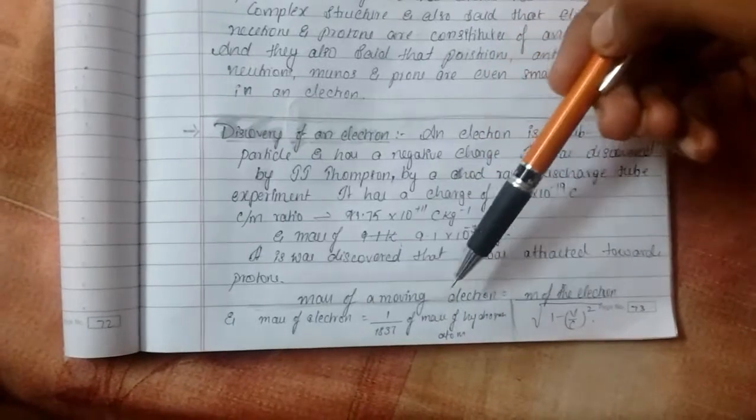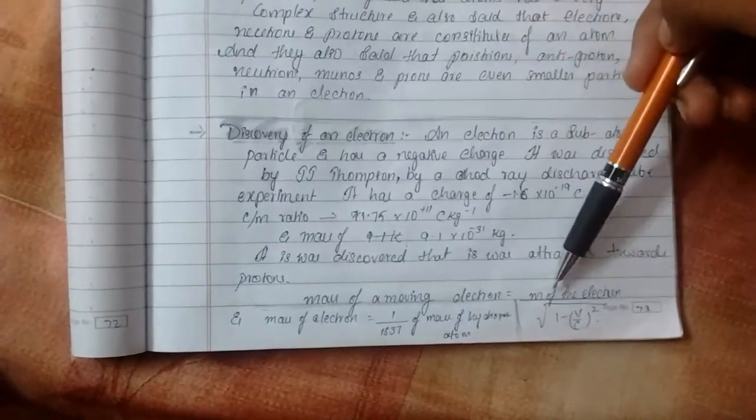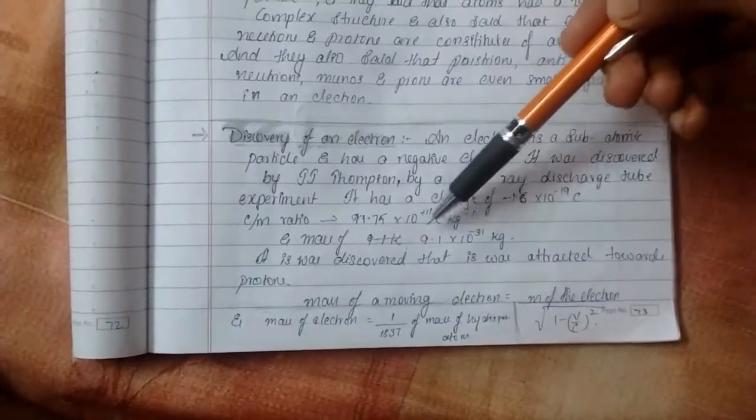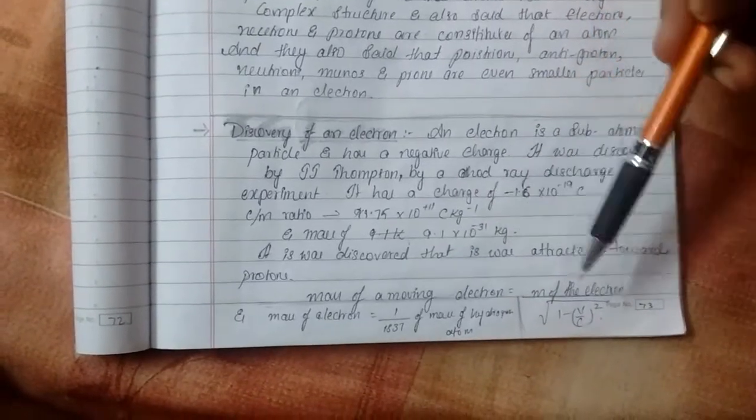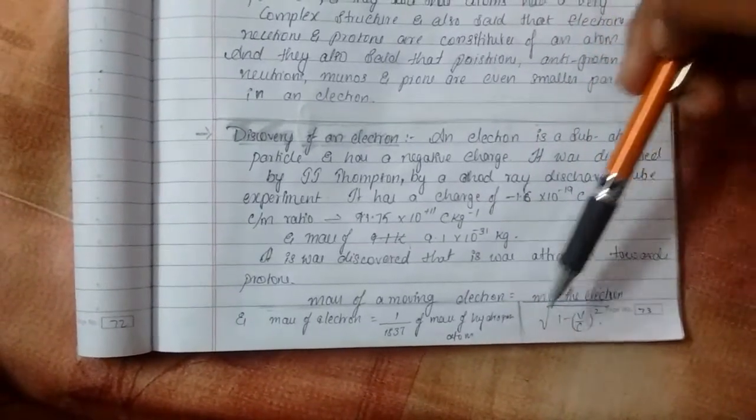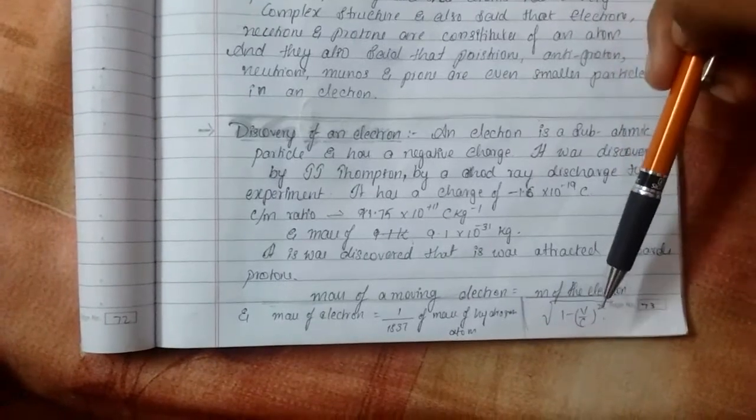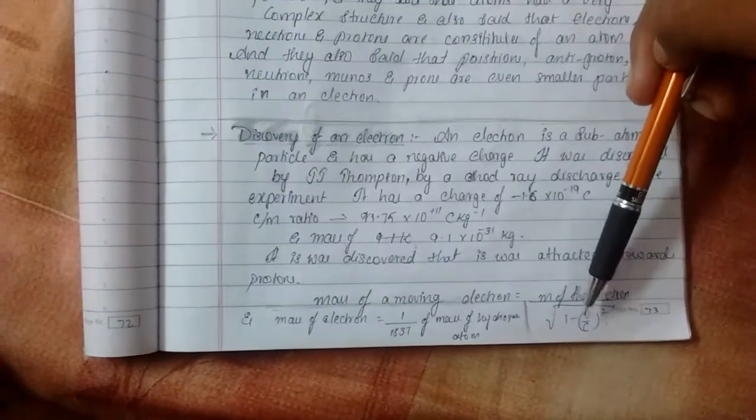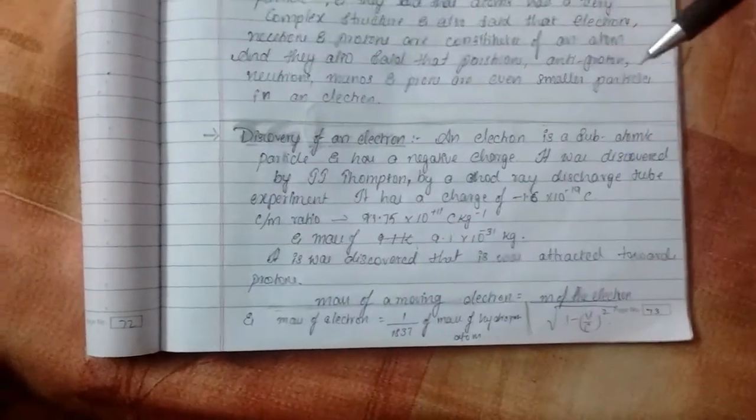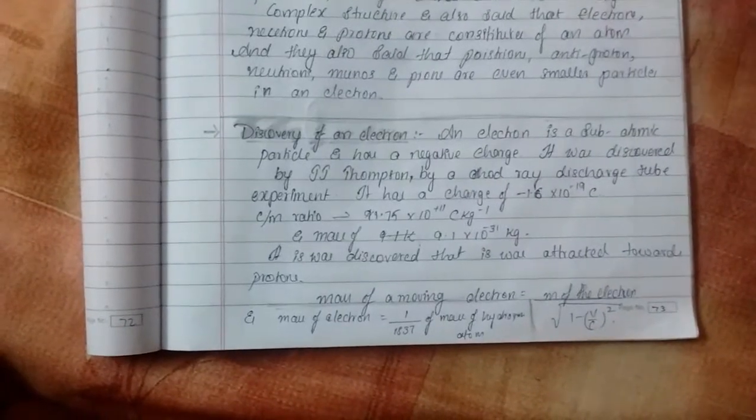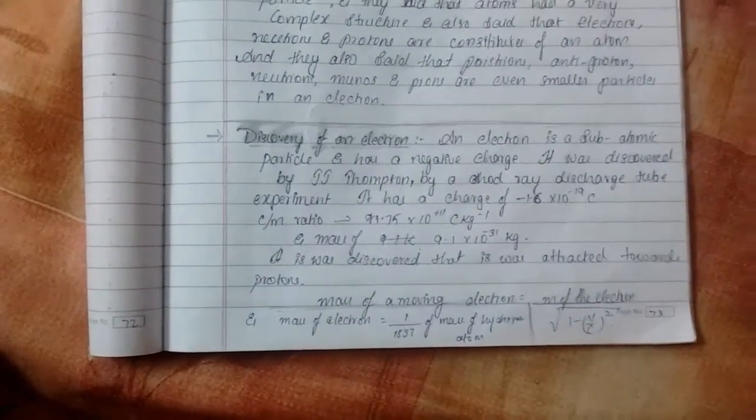Mass of a moving electron equal to the mass of the electron which is given here, it's 9.1 into 10 power minus 31 kg by root over 1 minus V by C square, whole square. It means that V here is the velocity in which the electron is moving and C here is the speed of light.